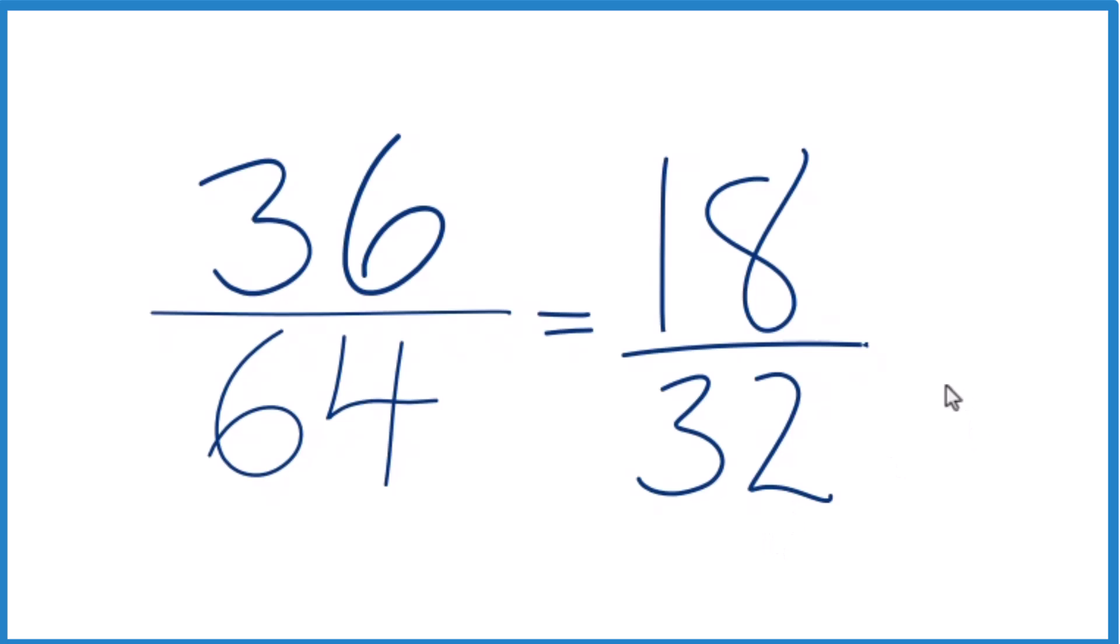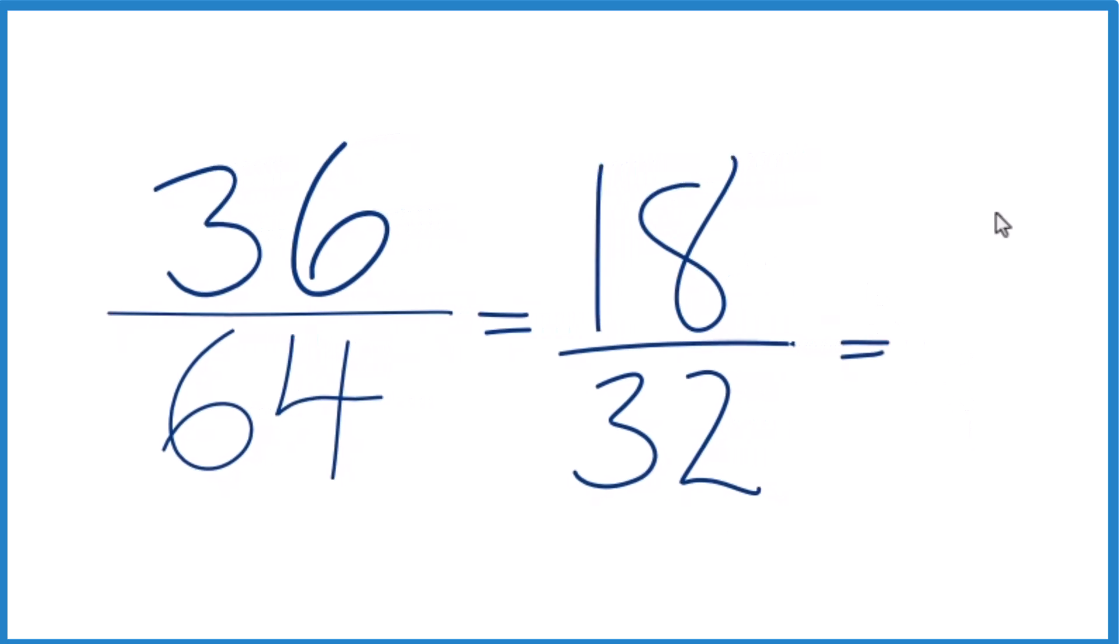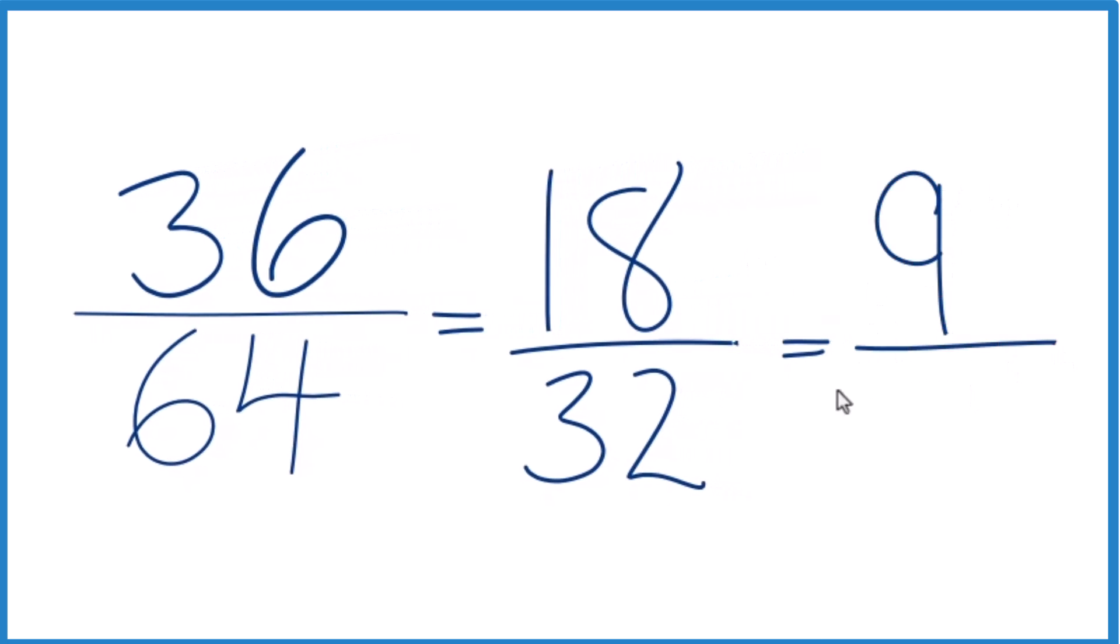Since they're even, we can do this again. 18 divided by 2 is 9, and 32 divided by 2 is 16.